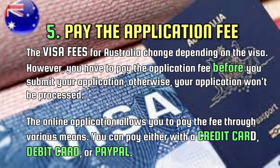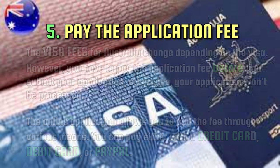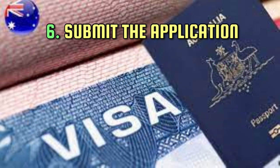Step 5 is to pay the application fee. Visa fees vary depending on the visa type, but you must pay before submitting your application — otherwise your application won't be processed. Currently, the Australia Tourist Visa Subclass 600 application fee is 150 Australian dollars. You can pay via credit card, debit card, or PayPal.